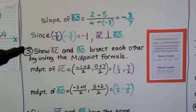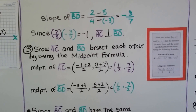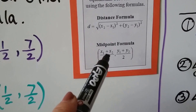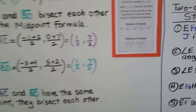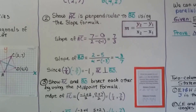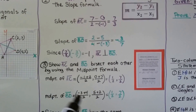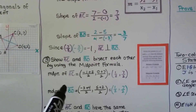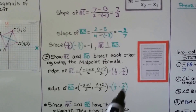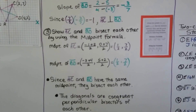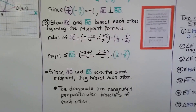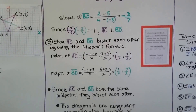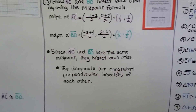Now the third thing we're going to do is show that segment AC and segment BD bisect each other by using the midpoint formula. Here's the midpoint formula — we take the first and second x and first and second y and divide them by two. We use the ordered pairs, and the midpoint of segment AC is one half for x and seven halves for y. The midpoint of segment BD is also one half for x and seven halves for y. Since segment AC and segment BD have the same midpoint, they bisect each other.